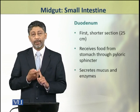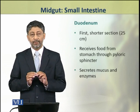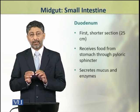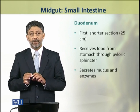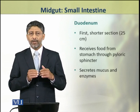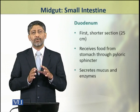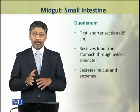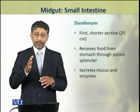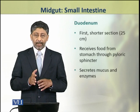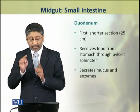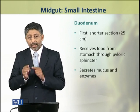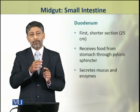Duodenum is the first, shorter section of the small intestine. In humans, it is about 25 centimetres long. The duodenum receives food from the stomach through the pyloric sphincter.